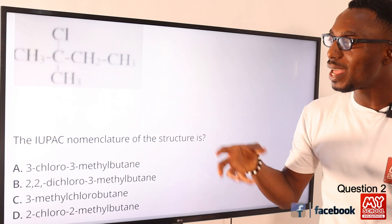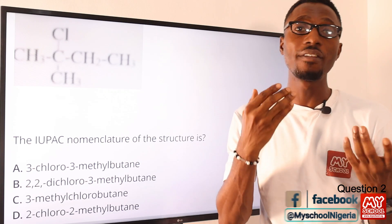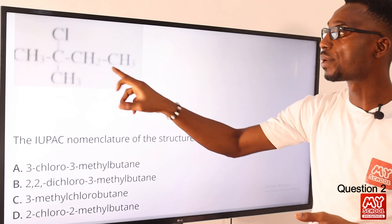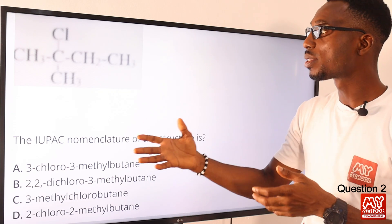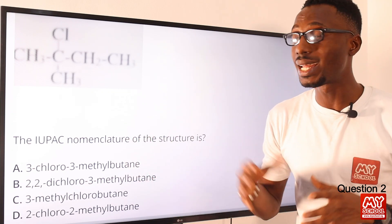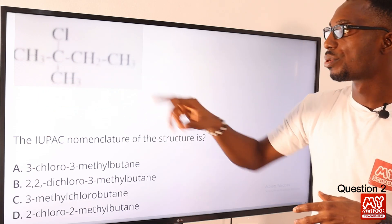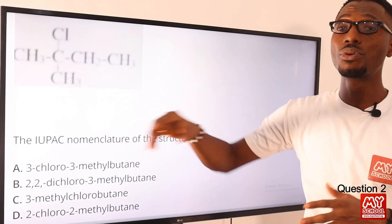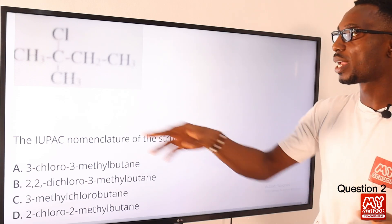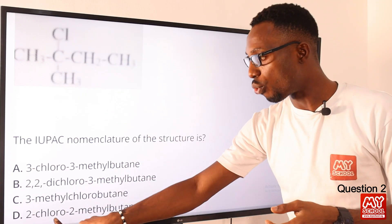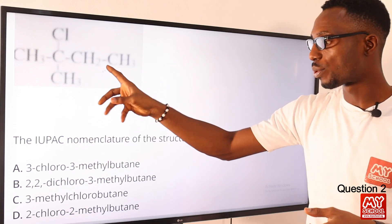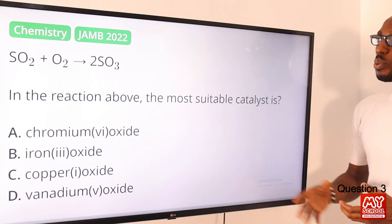We have a single bond, so we are talking about butane — the alkane family. Counting one, two, three, four gives us butane. Chlorine and methyl are located on carbon number two, so we have 2-chloro-2-methylbutane. The correct IUPAC nomenclature for this diagram is option D.